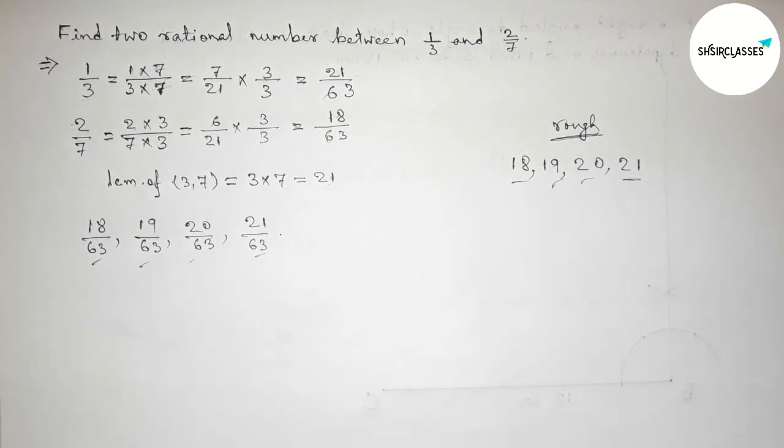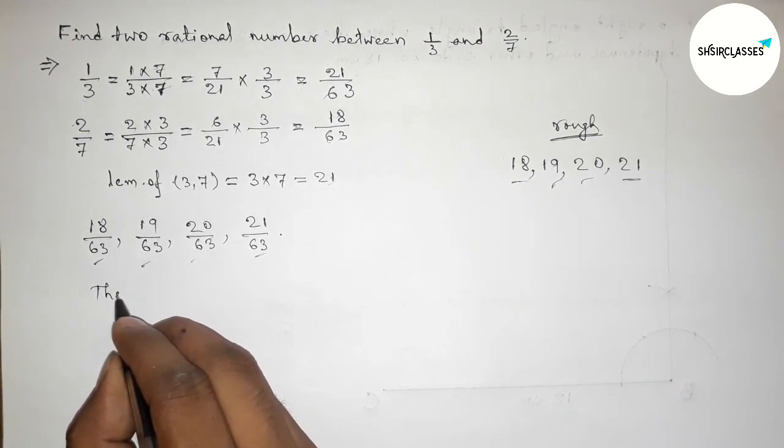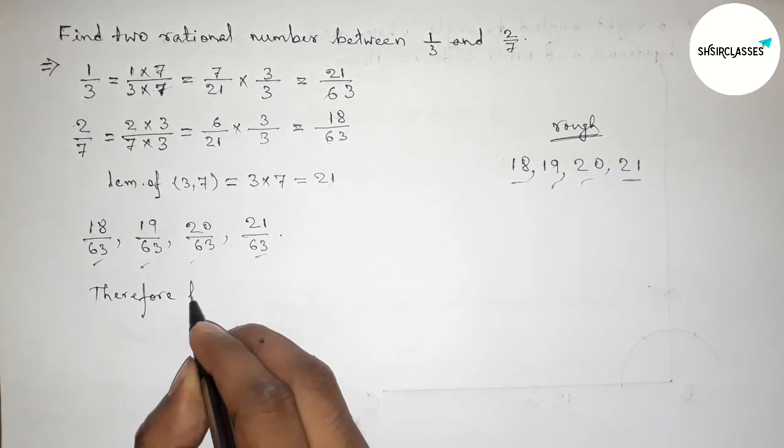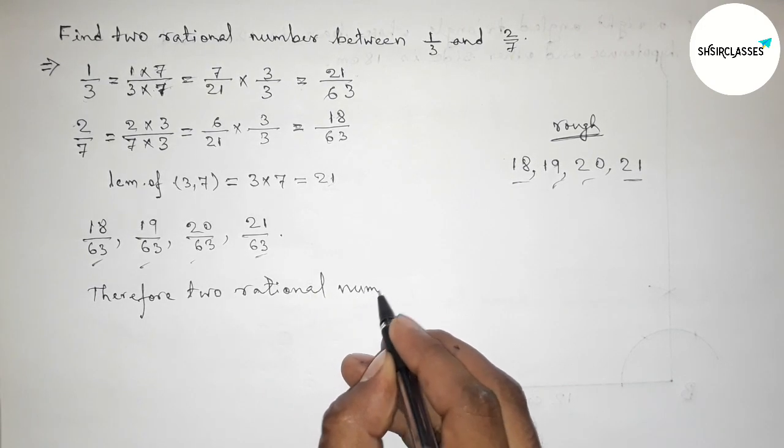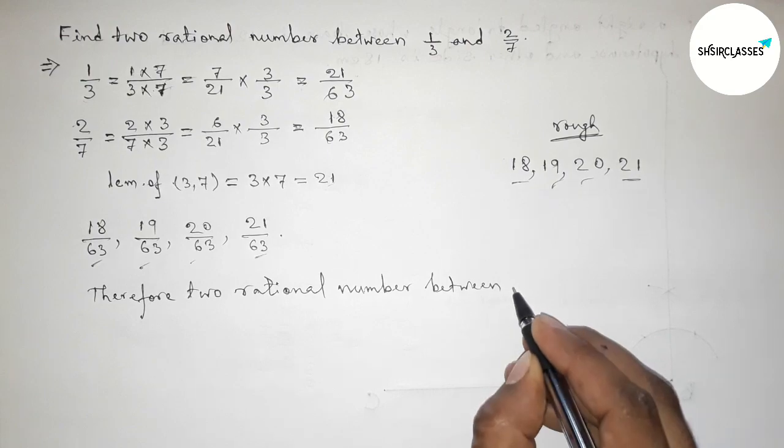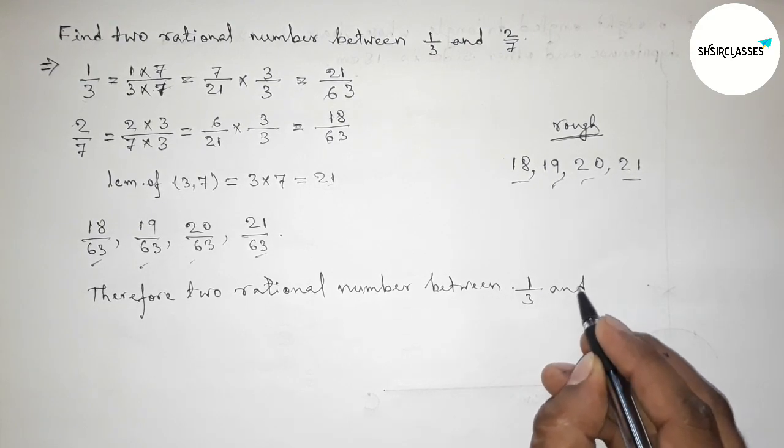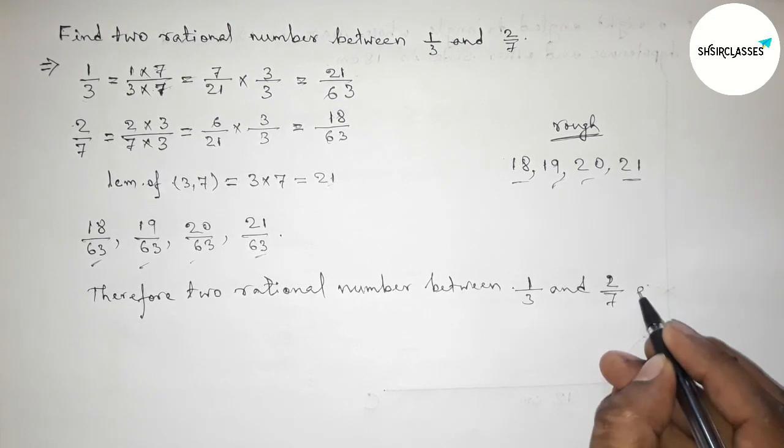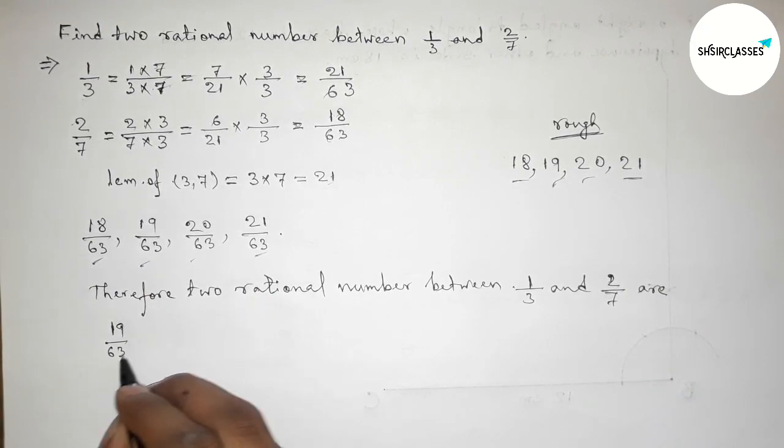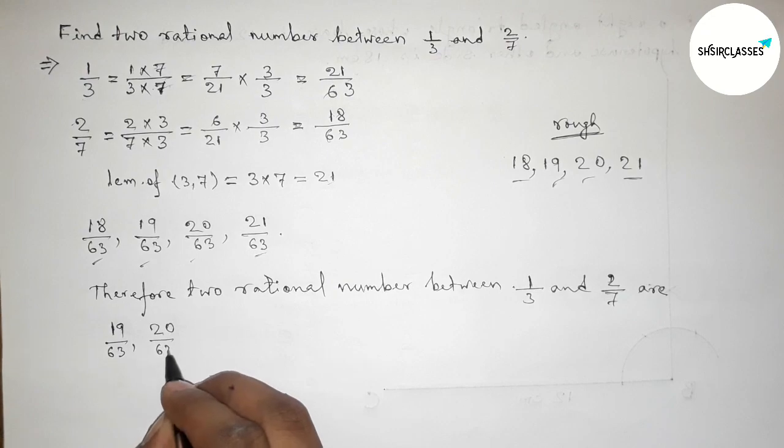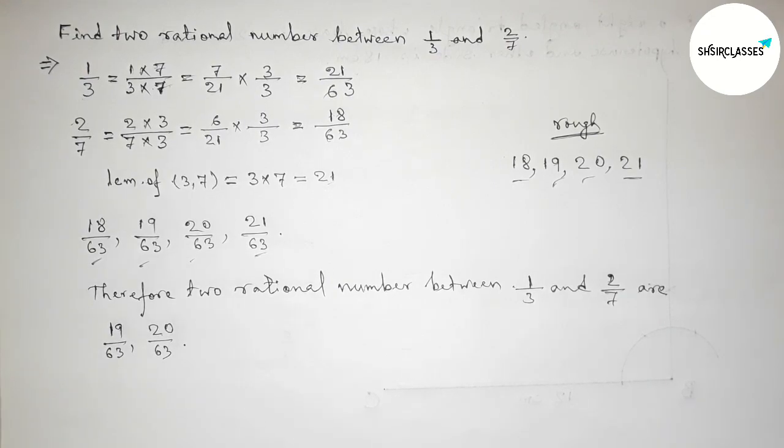Therefore, the required two rational numbers between 1/3 and 2/7 are, first one is 19/63 and 20/63. So that's all.